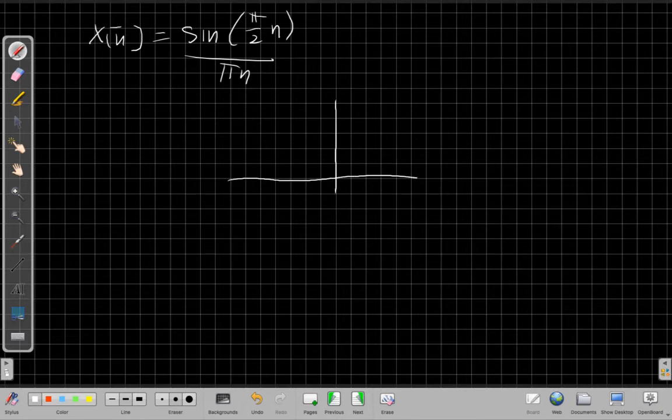So sine of pi over 2n over pi n. Well, like I said, the numerator is going to go at 0. This is 0. At n equals 1, it's 1. But then the denominator at n equals 1 would be pi. So at n equals 1, I have a 1 over pi, then a 0.